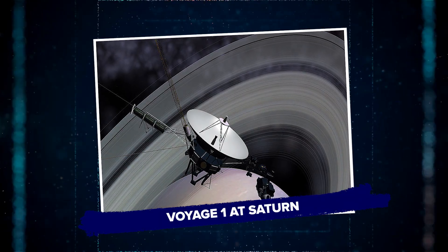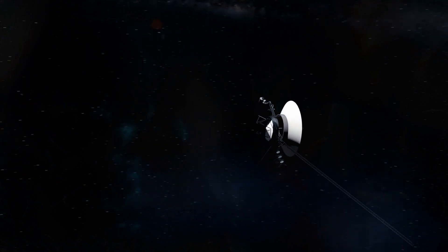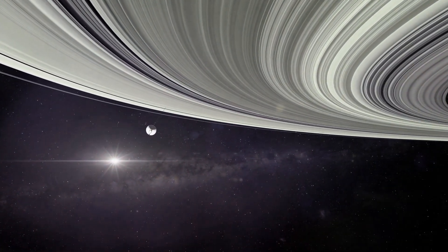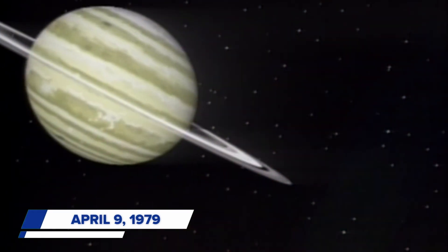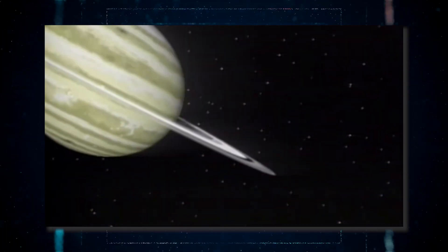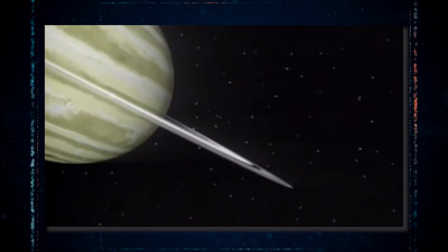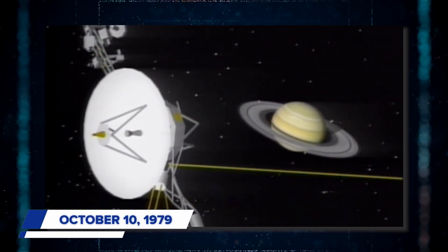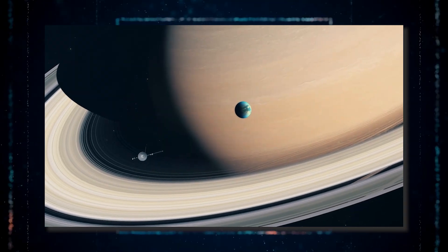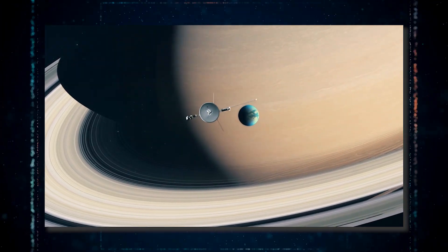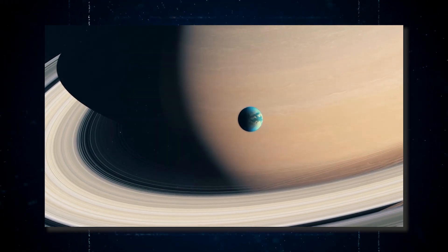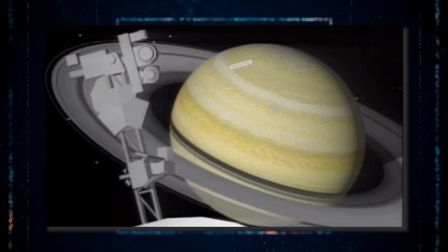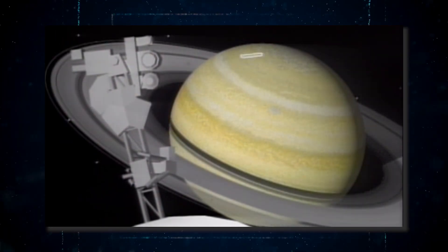Voyage 1 at Saturn. After its journey past Jupiter, Voyager 1 made a significant turn towards Saturn, with a course correction on April 9th, 1979. This adjustment was crucial for the spacecraft's upcoming close encounter with Saturn. A second correction on October 10th, 1979 was made to ensure Voyager 1 would safely pass by Titan, one of Saturn's moons, without any risk of collision.